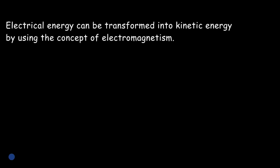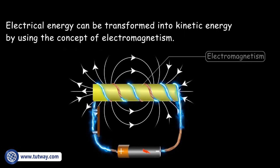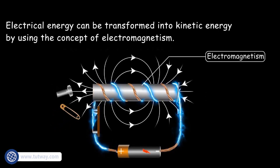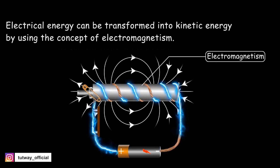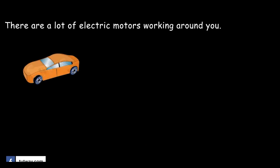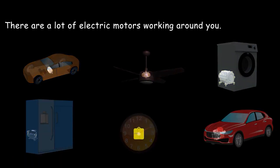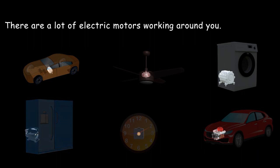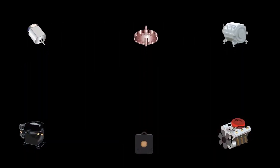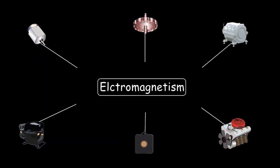Electrical energy can be transformed into kinetic energy by using the concept of electromagnetism. Have you ever noticed that there are a lot of electric motors working around you? For instance, we have motors in some toys, fans, washing machines, refrigerators, clocks, and vehicles. Everywhere we have electric motors, and all those motors work on the concept of electromagnetism.